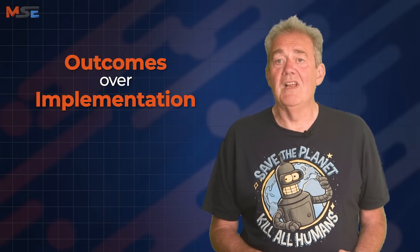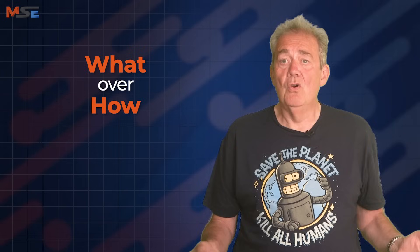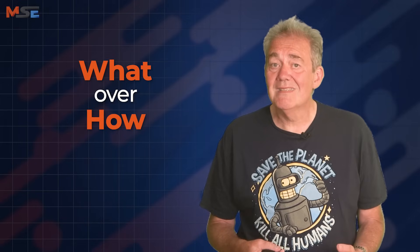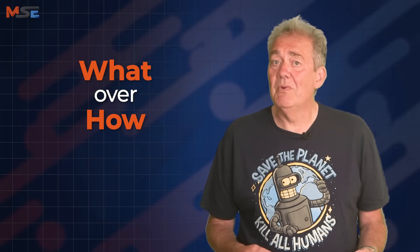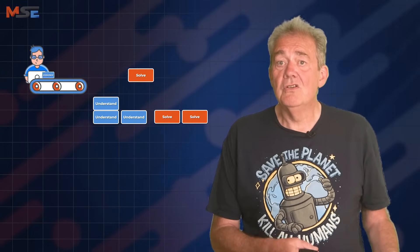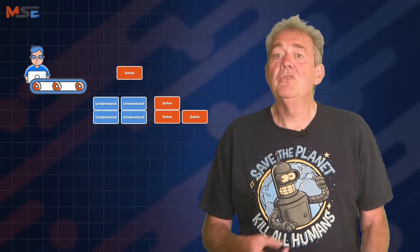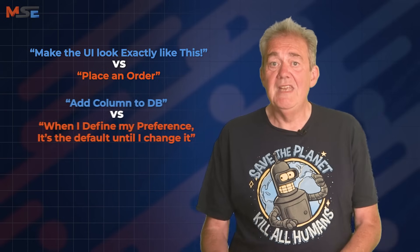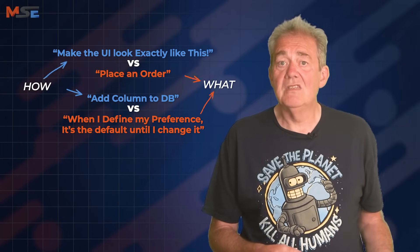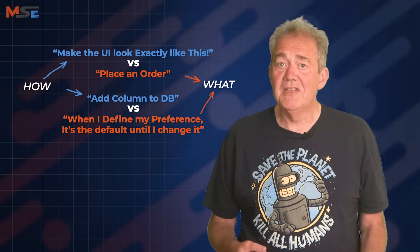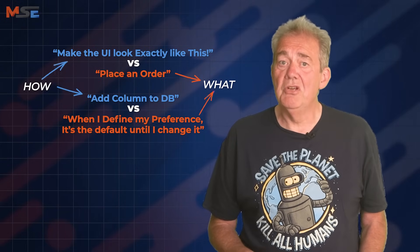These two important aspects of software development — what and how — are both essential, but are represented by very different sets of activities. Software development works best when we separate them, but don't separate them too far. Ideally, we'd like to focus all of our attention on defining the problem that we need to solve, and then, only once we have done that, focus all of our attention on how to solve it. Most teams confuse these two ideas, often by specifying software in terms of the solution rather than the need. This can get so bad that developers working on the system don't even understand what the system is for, which is a pretty sure route towards failure.